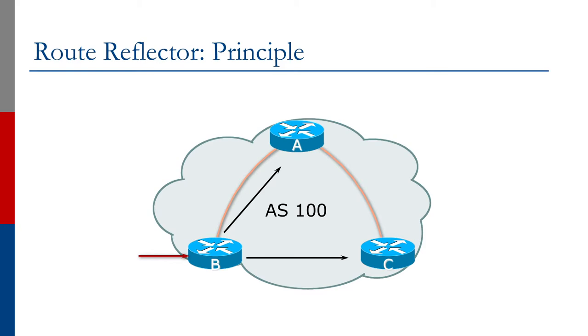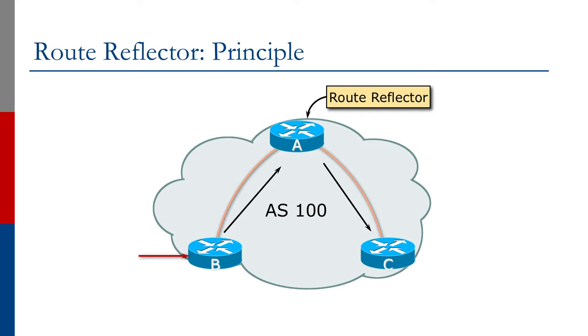The way the route reflector works is: if we convert router A so that prefixes it learns from B can actually be passed on to C, that is a very simple modification of the IBGP spec — let router A announce prefixes to other IBGP speakers. That's the principle: a very simple principle.